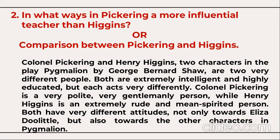Question number two: in what ways is Pickering a more influential teacher than Higgins, or compare and contrast between Higgins and Pickering? Colonel Pickering and Henry Higgins, two characters in Pygmalion by George Bernard Shaw, are two very different people. Both are extremely intelligent and highly educated but each acts very differently. Colonel Pickering is a very polite, gentlemanly person, while Henry Higgins is an extremely rude and mean-spirited person. Both have very different attitudes not only towards Eliza Doolittle but also towards the other characters in the play.